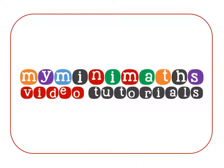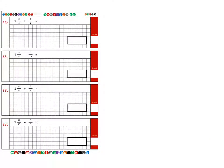Hello and welcome to today's myminimaths.co.uk video tutorial. Today we're going to be looking at the Arithmetic 16 practice question 33, where we're going to be looking at adding together a mixed number and a fraction.